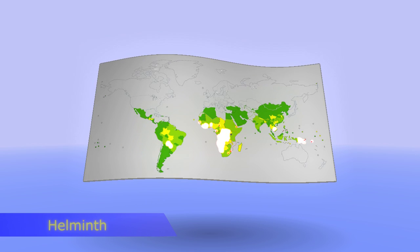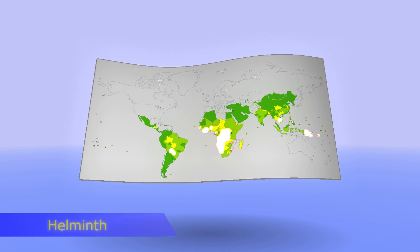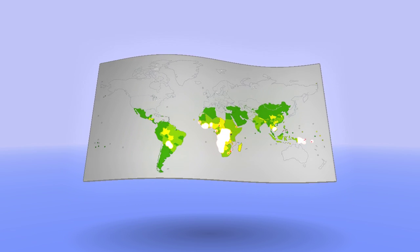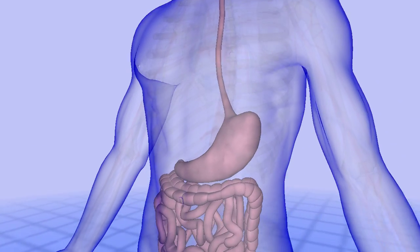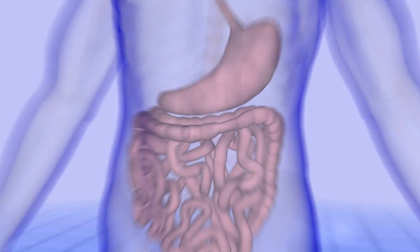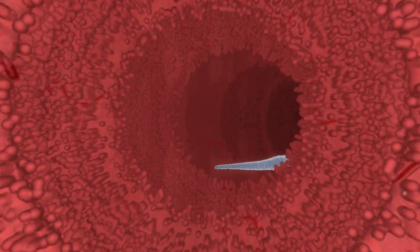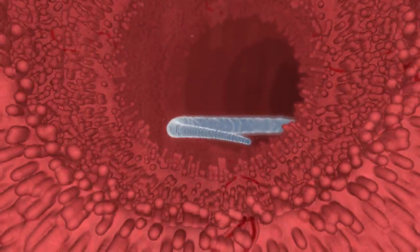Soil transmitted helminths cause chronic infections in over 2 billion people living in developing countries. Chronic helminth infection is particularly problematic for children and can lead to poor growth, mental impairment, and increased susceptibility to other infectious agents such as HIV, malaria, and tuberculosis.